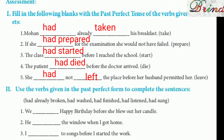'The class had started before I reached the school.' The bracket word is 'start.' 'The patient had died before the doctor arrived.' 'She had not left the place before her husband permitted her.' — the third form of 'leave' is 'left': leave, left, left.